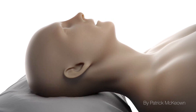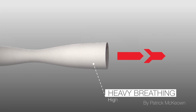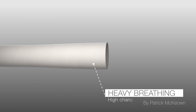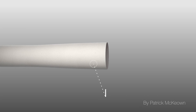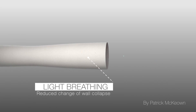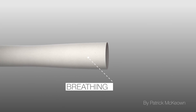Imagine inhaling a large volume of air through a collapsible paper straw. The heavier one breathes, the greater the likelihood of the walls of the straw collapsing inwards. On the other hand, breathing lightly through the straw causes less negative pressure, thereby reducing the risk of collapsing the walls.